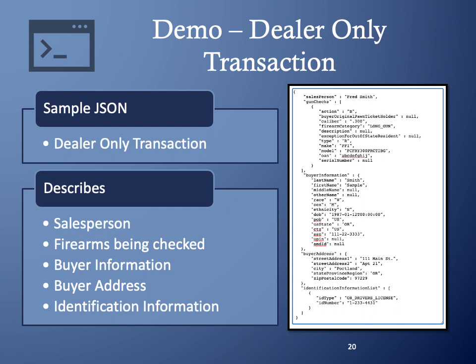Let's walk through a demo of adding a dealer-only transaction via the API. When creating a dealer-only transaction, you will need the name of the salesperson, a collection of firearms to check, details about the buyer, and a collection of identification information. As we can see in the JSON, the data is organized logically. For the stolen firearm check, we have the gun checks block describing the firearms. Next is the buyer information block with name, characteristics, and personal data. The buyer address section describes the buyer's address. Finally, the identification information collection describes what forms of identification the buyer provided.